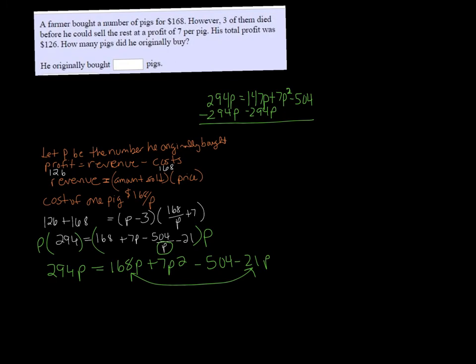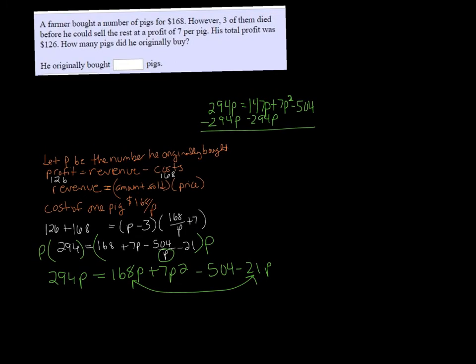After I do that, I get zero on one side. And on the other side, I'm going to get $7P squared, and then $147 minus $294 is minus $147P, and then minus $504.